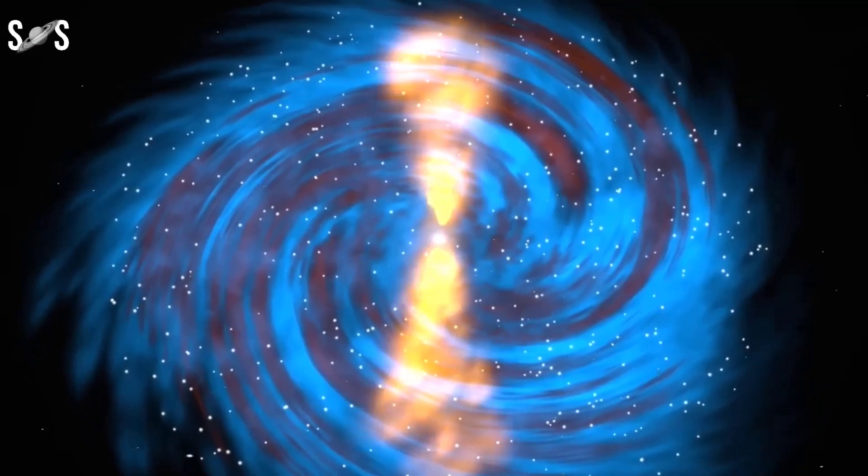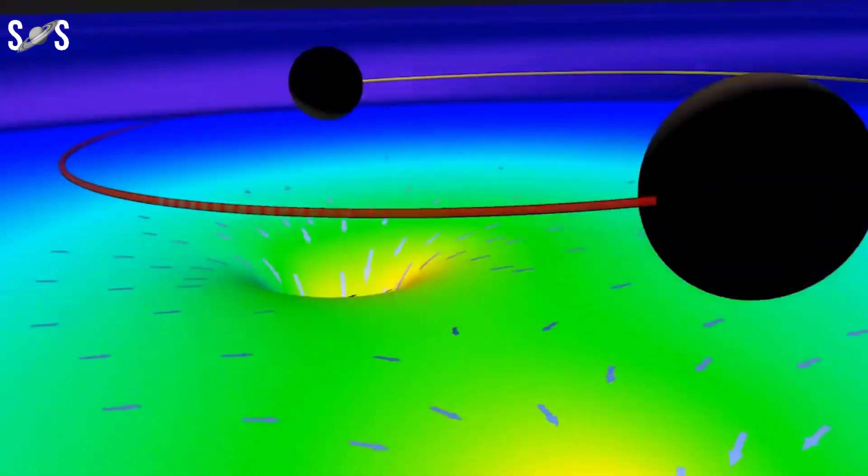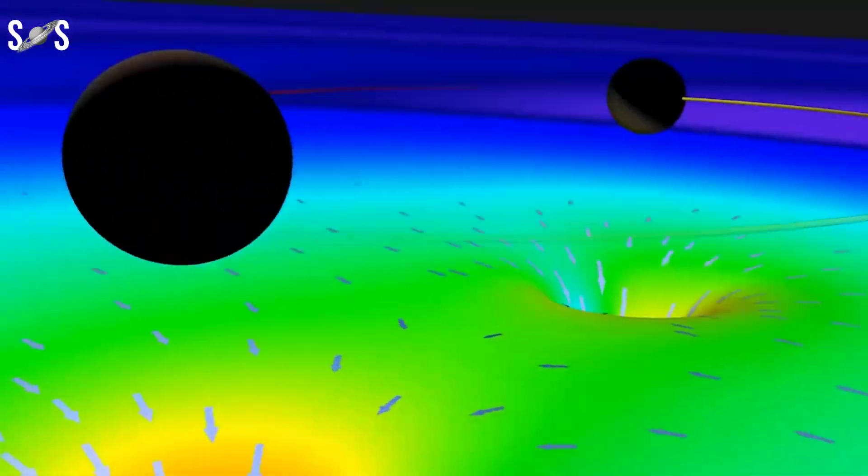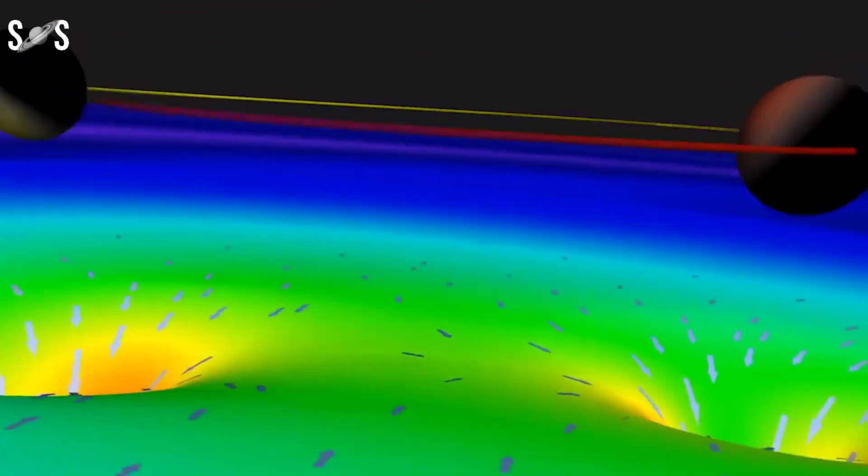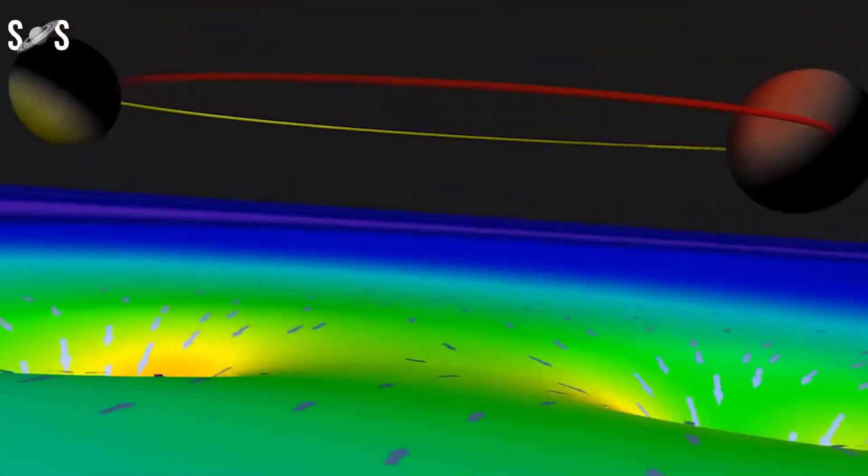But active black holes are messy eaters and generate tremendous amounts of light as they feed themselves. So our telescopes and space instruments can usually spot them in x-ray or optical light.